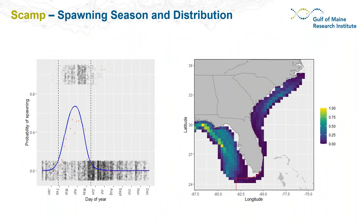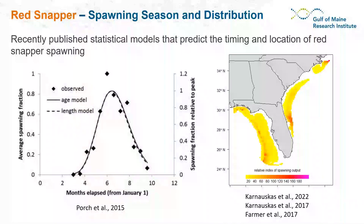The spawning season is applied to all simulations. The spatial distribution is used only in the simulation that releases particles throughout the entire spawning distribution. For red snapper we use the same types of distributions — a spawning season and spatial distribution — derived from recently published statistical models. The approach was slightly different in covariates and data but has been previously published and used for red snapper larval dispersal simulations.